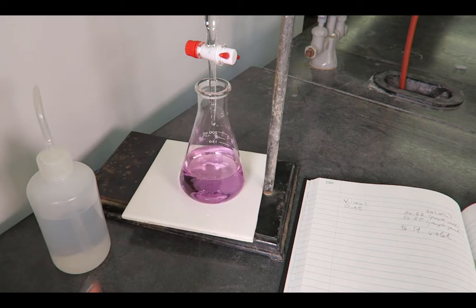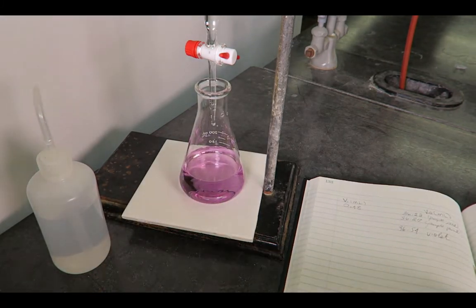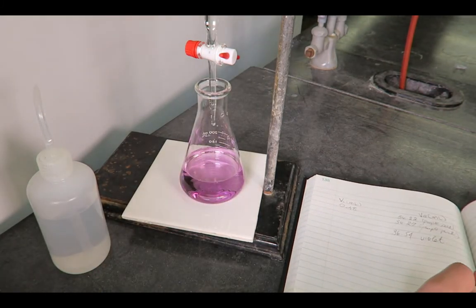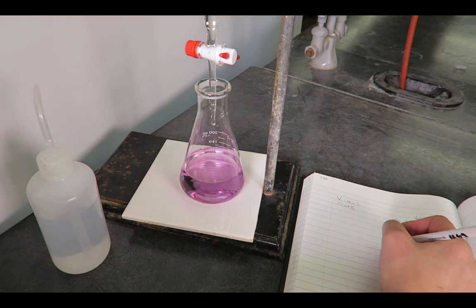When the color of the indicator first begins to change, titrate drop-wise, stopping frequently to wash down the walls of the conical flask with deionized water.